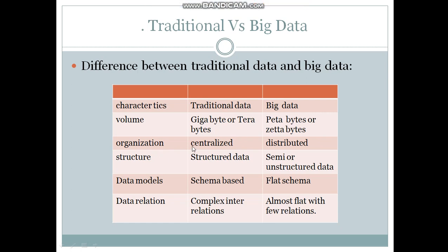Next, coming to the differences between traditional data and big data. These are the different characteristics between traditional data and big data. Volume: the size is gigabytes or terabytes in the traditional system, whereas in big data the size should be petabytes or zettabytes. So the size is increased in big data. Big data stores a large amount of data when compared to traditional database systems.